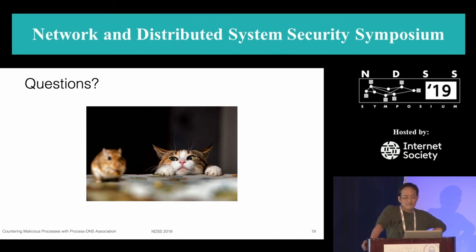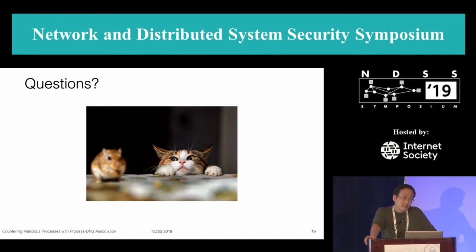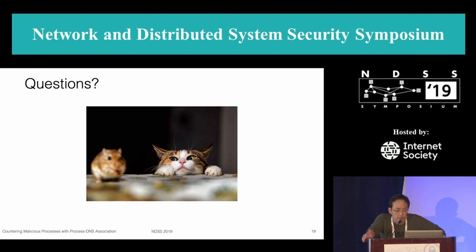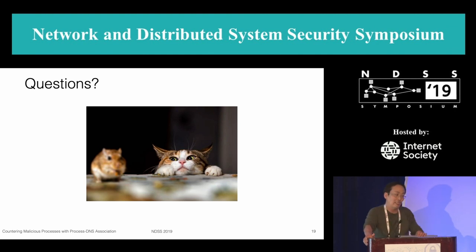Q: Thanks for the discussion on possible evasion methods. Could you comment on the difference in evasion technique between this endpoint DNS solution and the traditional DNS solution? A: The most common challenge shared by endpoint solutions is that the attacker can have control over the host. Compared to a centralized network solution, it has its own limitations. Therefore, there should be a way to cross-check validity, and another way to deal with such evasion attempts is to collaborate the defense effort to address those evasions.